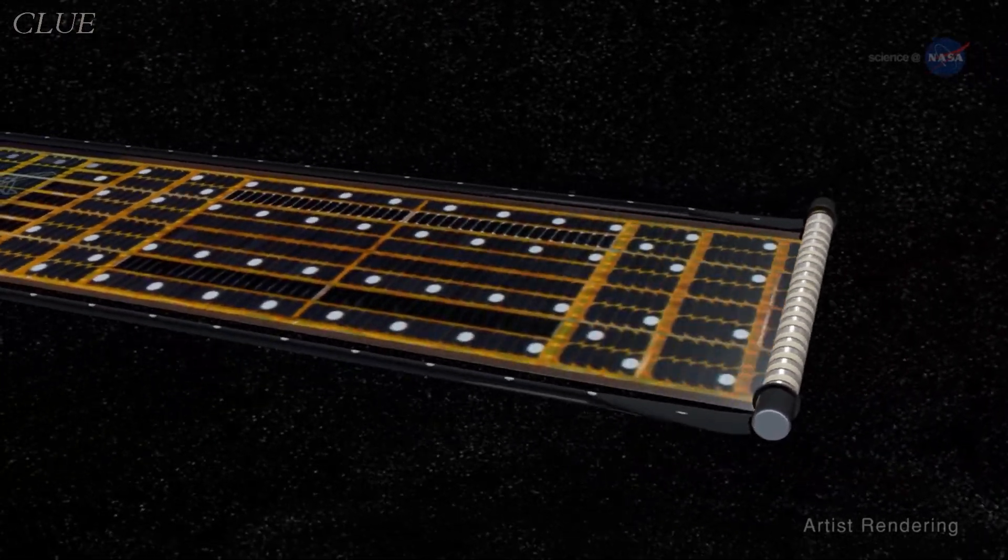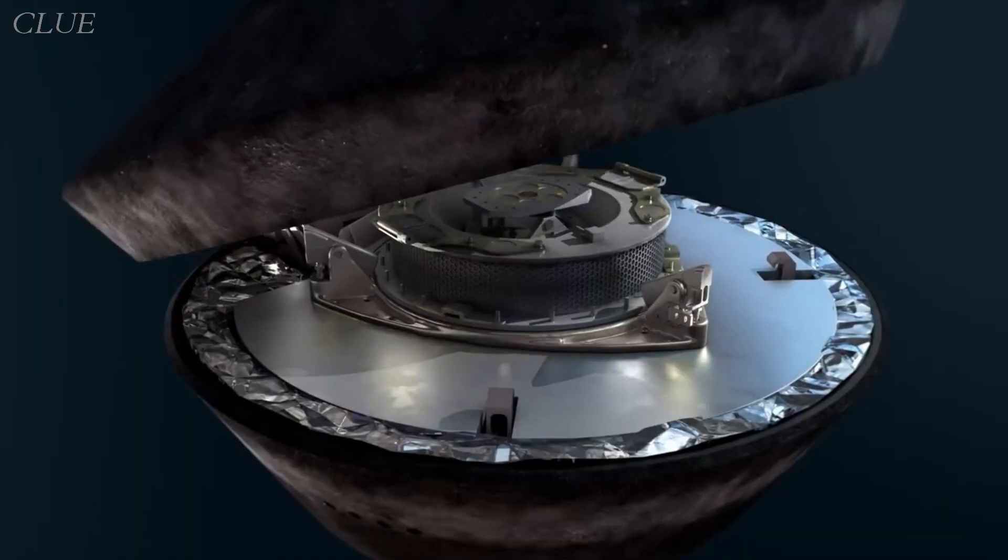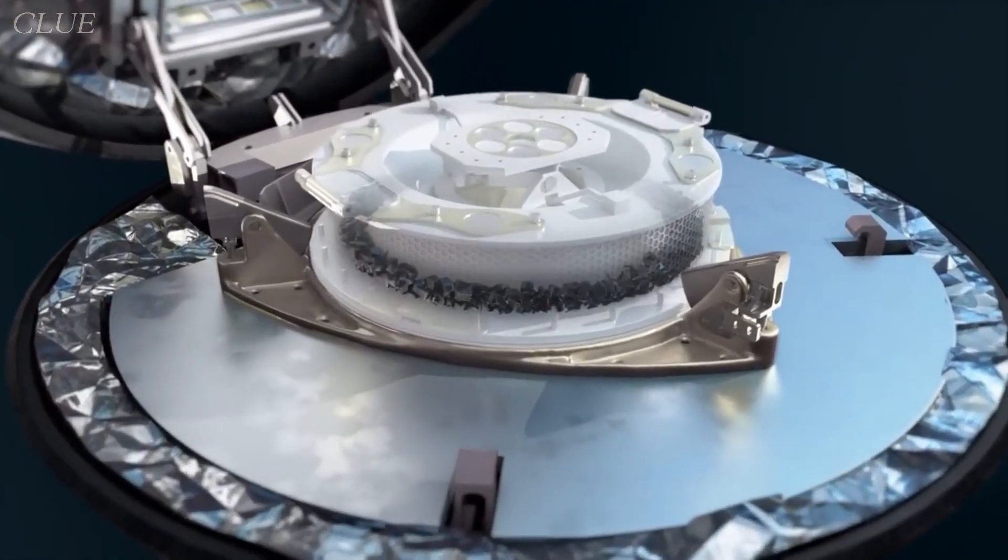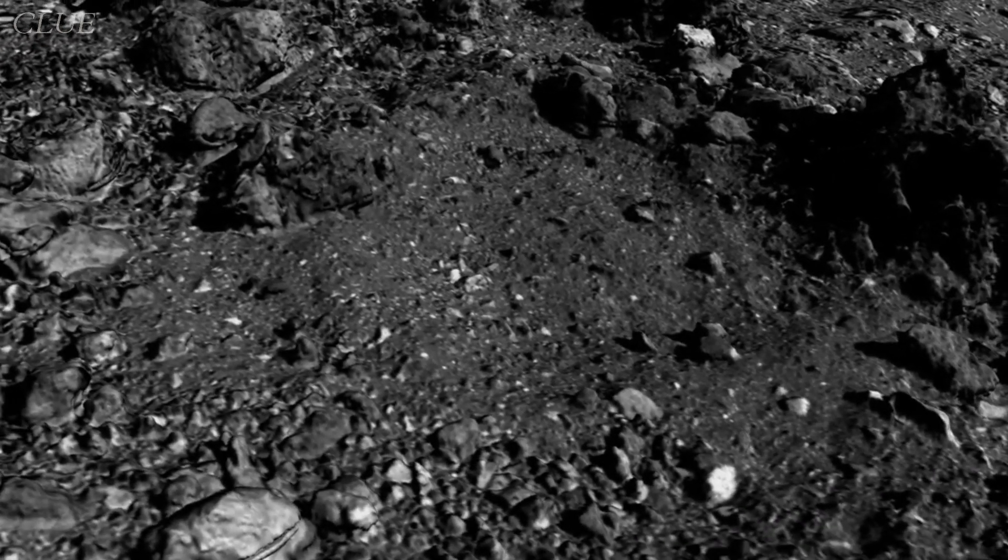The OSIRIS-REx spacecraft was powered by solar panels and had a sample acquisition system for collecting asteroid material. It was equipped with scientific instruments to study Bennu, including cameras, spectrometers, and a laser altimeter.